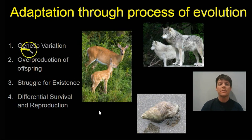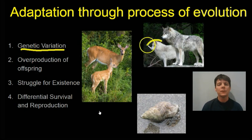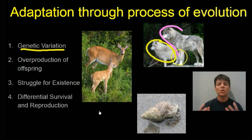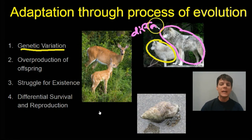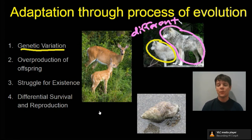The next characteristic is that living things show adaptation through the process of evolution. Evolution is driven by a process called natural selection. The first component of natural selection is genetic variation. Here we see two wolves. When we look at the wolves, they're not identical because each wolf has a unique set of genes, making the two wolves different from each other — they are unique individuals.